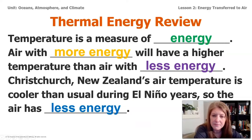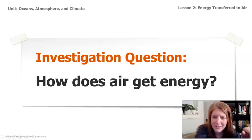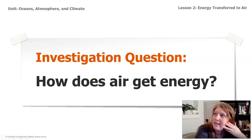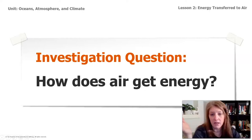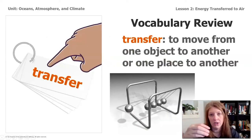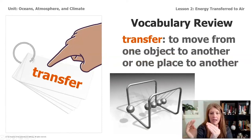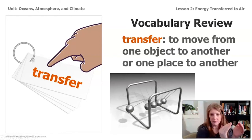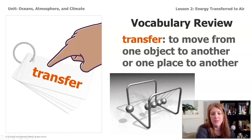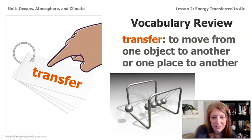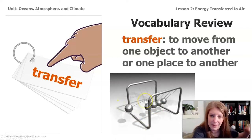But now the question we really want to know is: how does air get energy? We know that the source of all energy is from the sun. So how does the energy transfer from the sun to Earth? When we think of the word 'transfer,' we know that it means to move energy from one place to another. This illustration of a Newton's cradle shows the energy transferring from one sphere ball to the next by coming into contact.